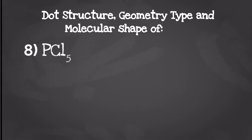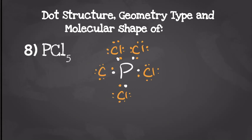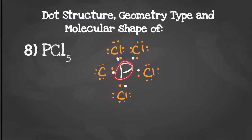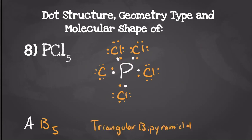For our next molecule we have phosphorus pentachloride. Phosphorus is going to have five valence electrons and each chlorine is going to have seven. So when we draw our dot structure it's going to look something like this. Each chlorine is going to have eight valence electrons, and phosphorus, because it's in the third period or below, can hold more than eight. We have one center molecule with five things attached to it — that's going to give us a geometry type of AB5 and a molecular shape of trigonal bipyramidal.